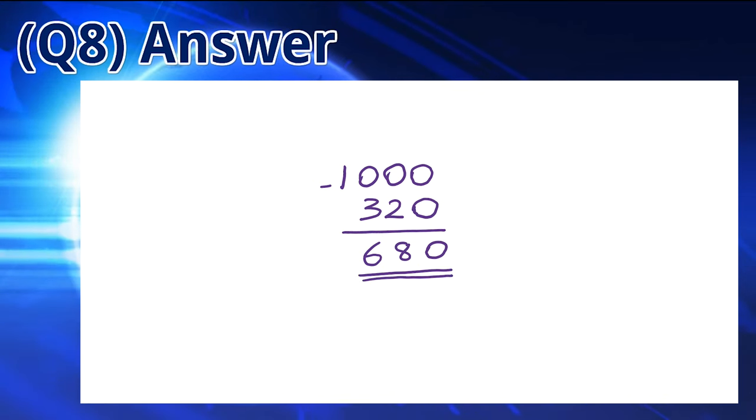1 liter is equivalent to 1000 milliliters. We can subtract 320 from 1000, which gives us 680 milliliters left. So the answer is C.